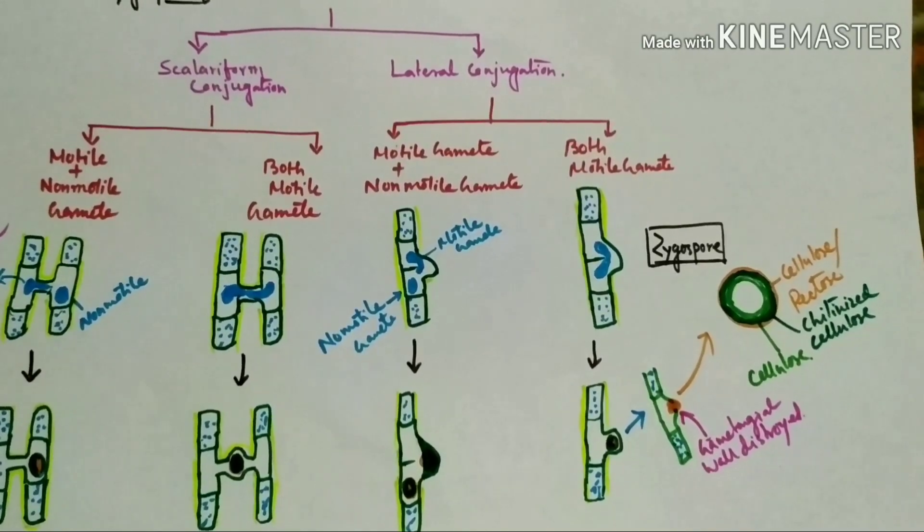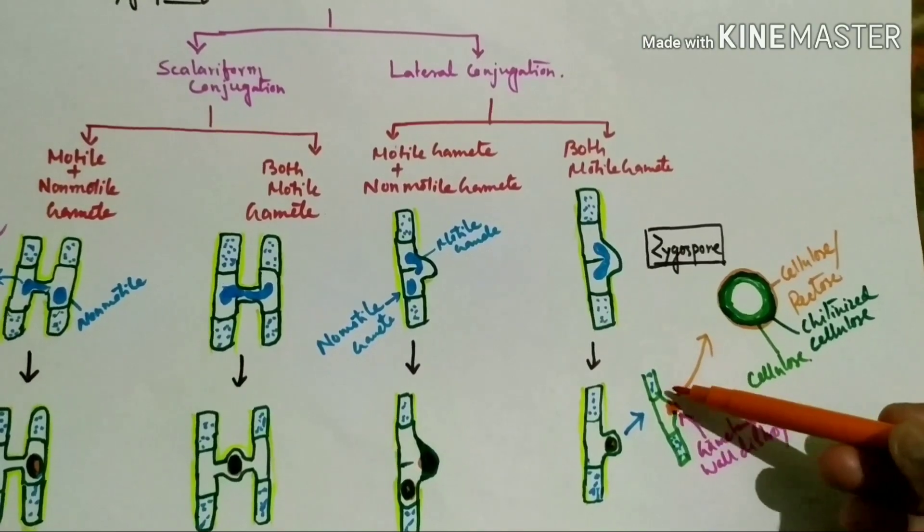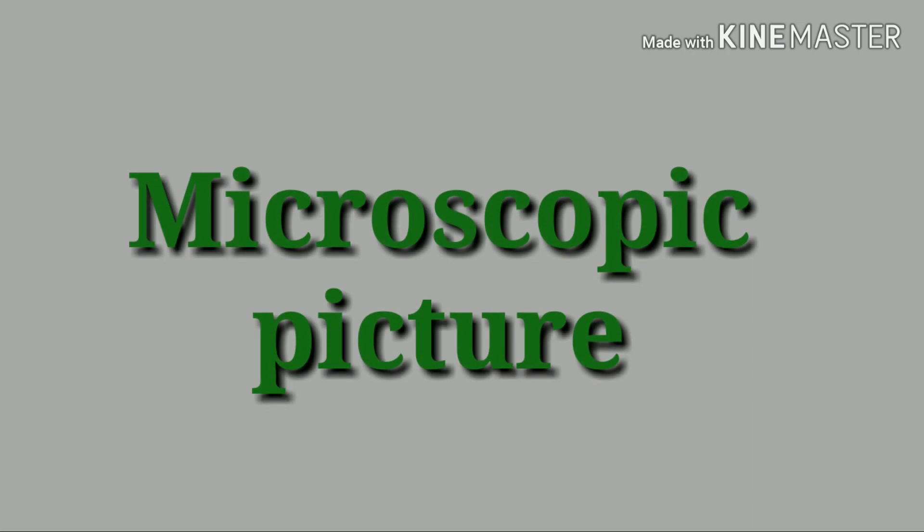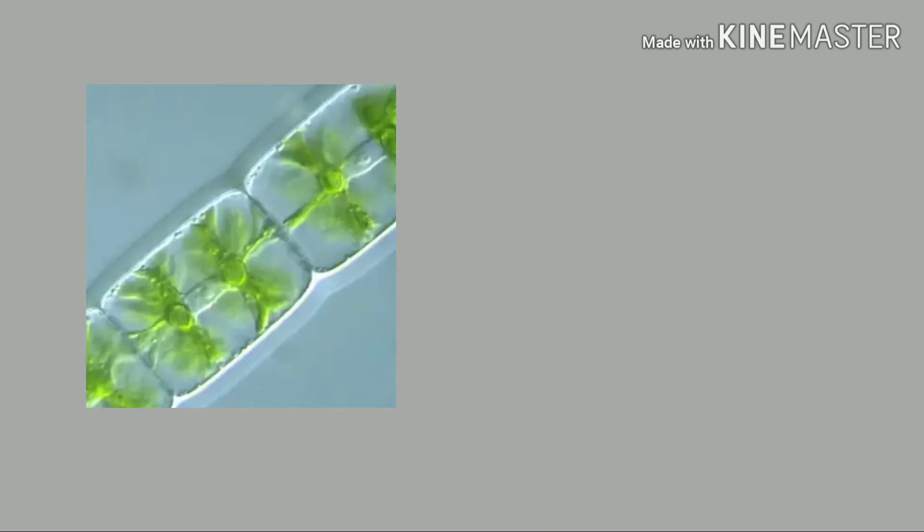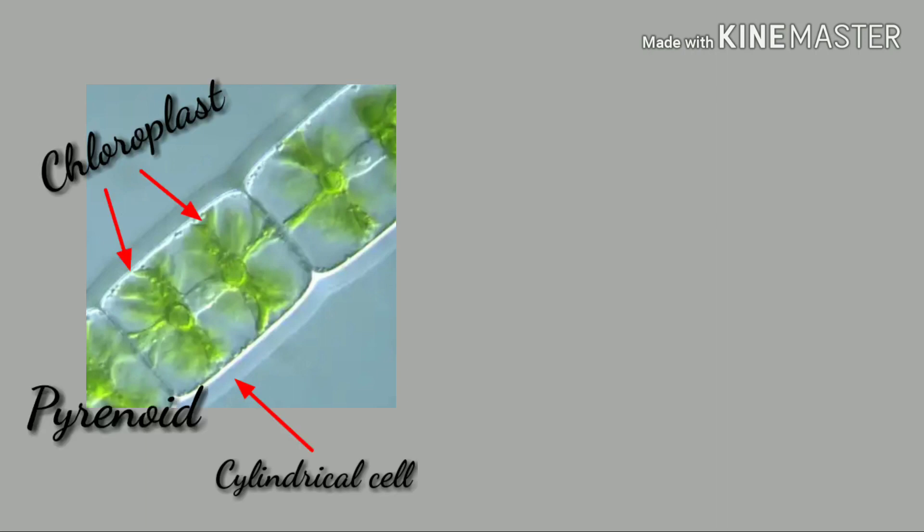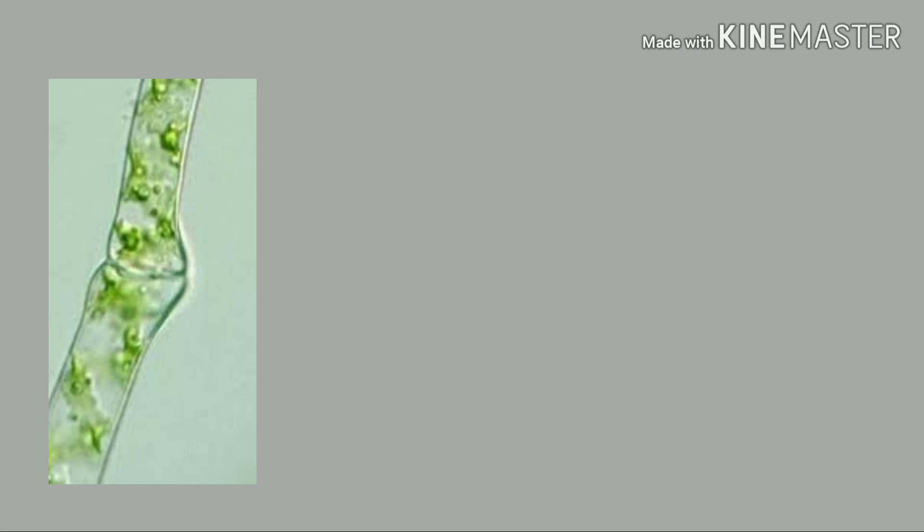Here are some pictures which I collected from the internet. I think this gives you a clear concept about Zygnema. This is a Zygnema cell which is cylindrical and contains two chloroplasts, two pyrenoids, and a nucleus. Next, this is a picture about scalariform conjugation tube and amoeboid movement, and this is a picture about formation of lateral conjugation tube.